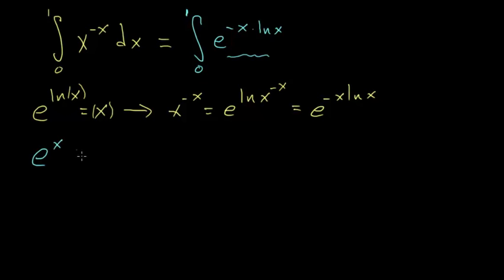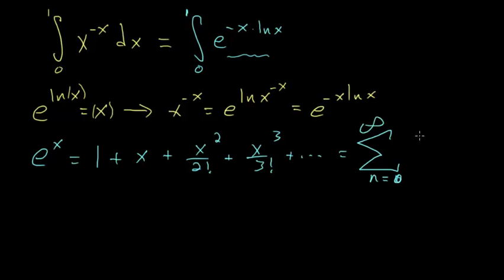We recall that e to the x is simply 1 plus x plus x squared over 2 factorial plus x to the third over 3 factorial, and so on, written with summation notation. This is the sum from n is equal to 0 to infinity of x to the nth power over n factorial.